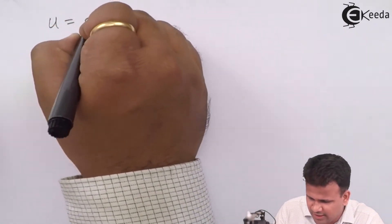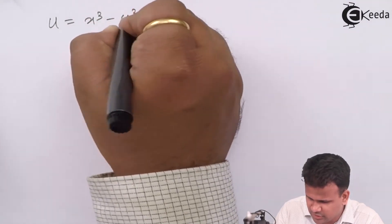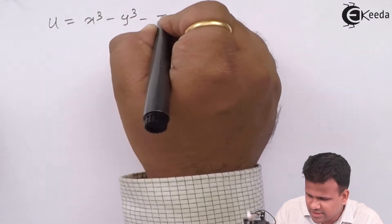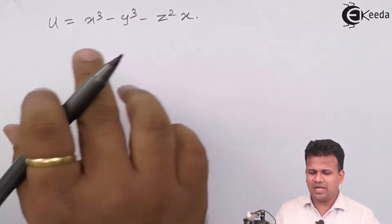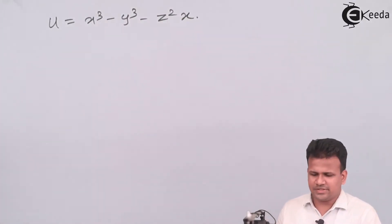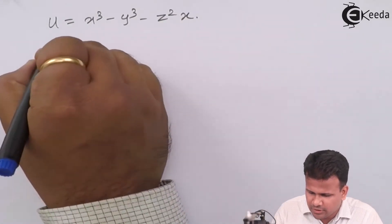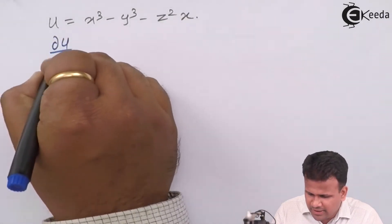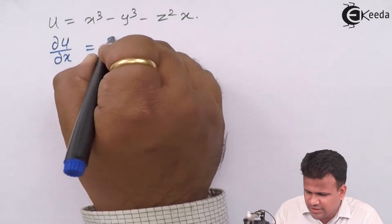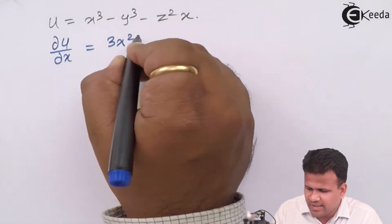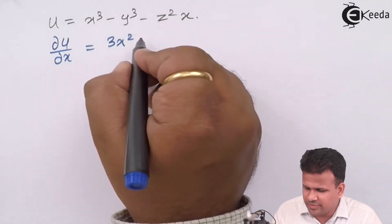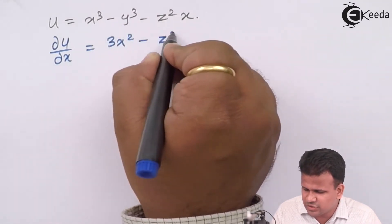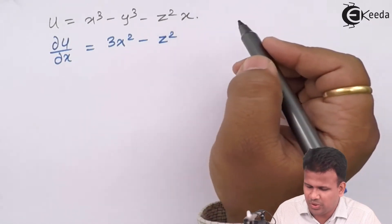From the problem, we know that u = x³ − y³ − z²x. We differentiate this with respect to x, so ∂u/∂x = 3x². Since y³ is not a function of x, that term gives 0, and the derivative of z²x with respect to x is z², giving us ∂u/∂x = 3x² − z².